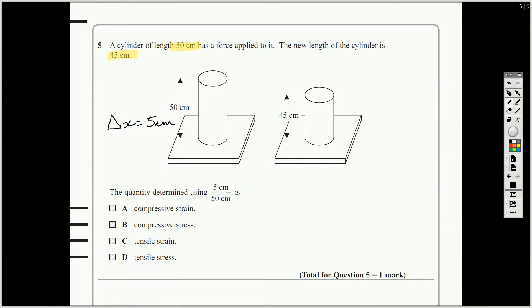The quantity determined using 5 over 50 is, well, that is delta X over X. All you need to do is go to the equation sheet, and you will see the section on the Young modulus. Young modulus is stress over strain, but it's not asking you about the Young modulus, it's just the equations that you need. The equation for stress, sigma, is F over A. So, that's not F over A, is it? So, it's not either of them, it says stress. Strain is epsilon is delta X over X, and of course, the change in length over the original length. Is it compressive or tensile? Well, it's compressive because it involves a squashing. If you like, it's a negative delta X, so a negative change in length.